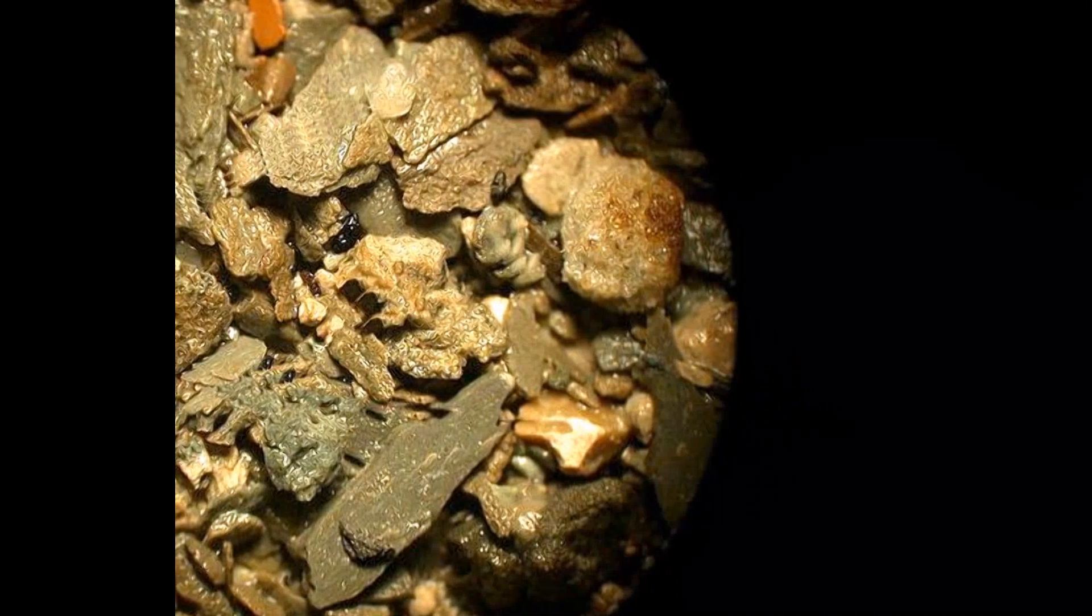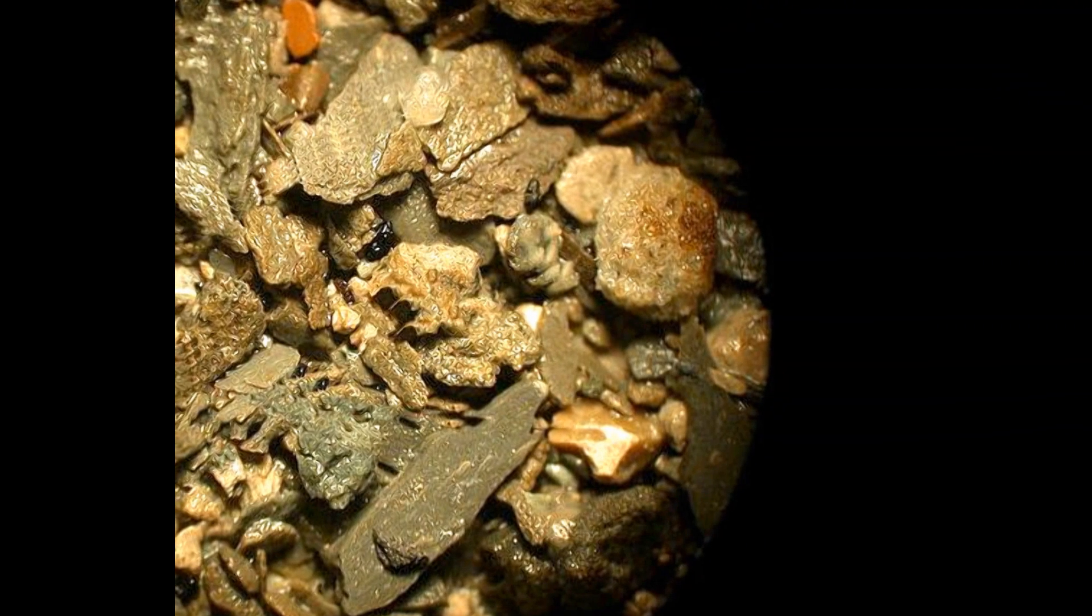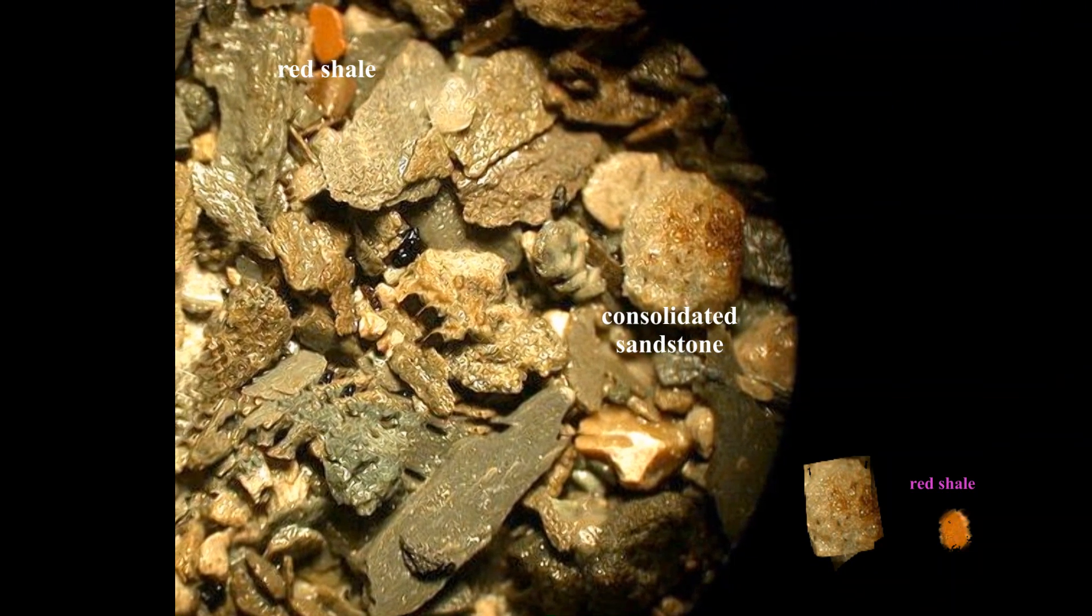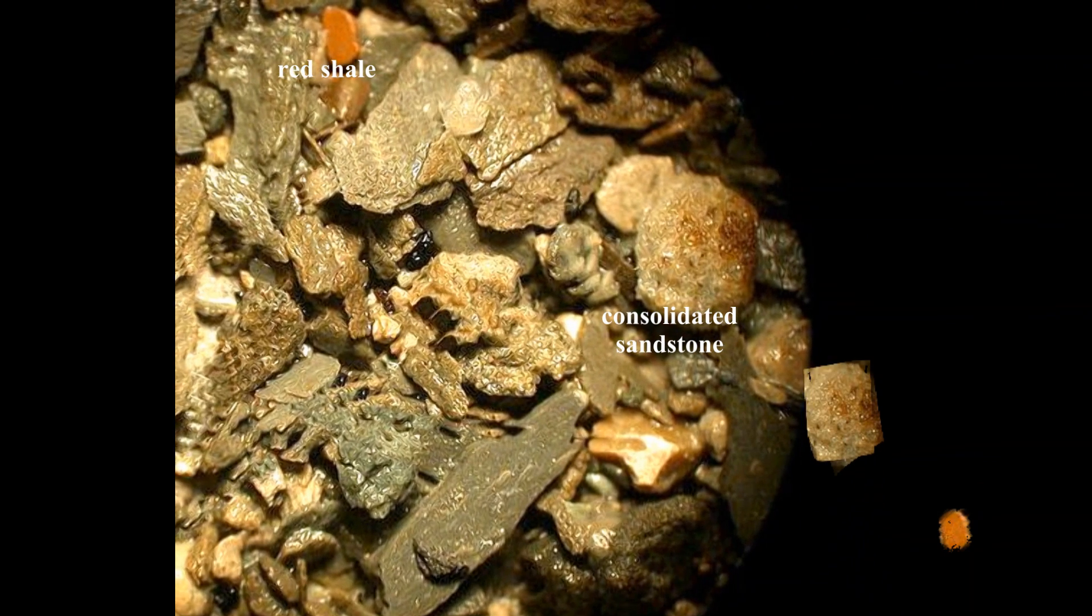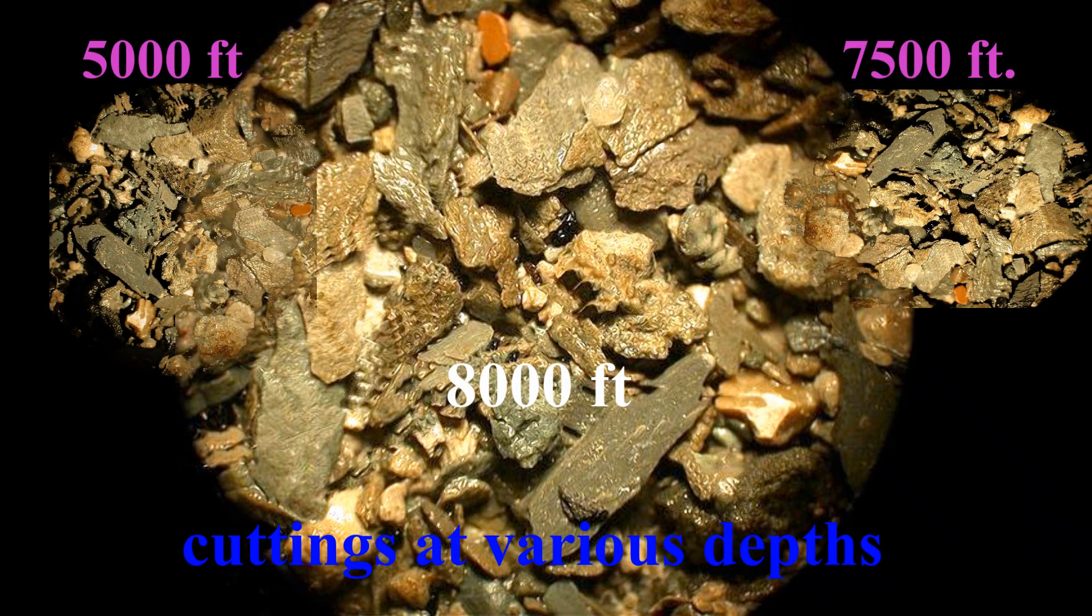For example, because not all cuttings rise to the surface at the same rate, large, low-density cuttings can rise faster than small, high-density ones. In addition, particles from redrilled portions of the well may have fallen into the hole because of clay swelling or may have sloughed off from the formations further up in the hole and can become mixed with other samples of cuttings deeper in the hole.